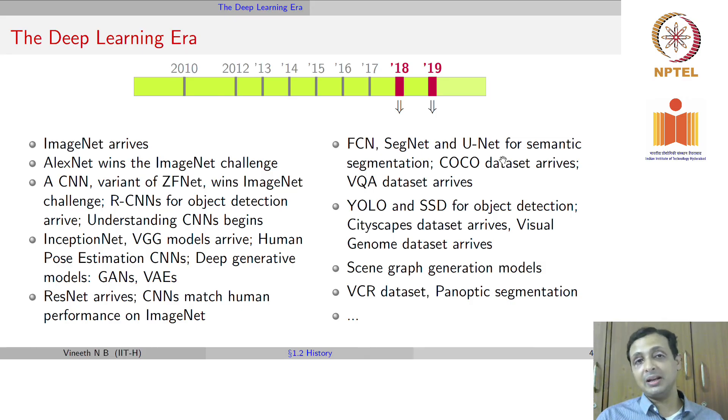In 2018 and 2019, higher levels of abstraction such as the visual commonsense reasoning dataset, where we try to see if we not only give an answer to a question on an image but can also give a rationale to that answer, and tasks such as panoptic segmentation have been developed. As you can see, this journey has focused on going from low level image understanding to higher and higher abstractions of the world we see around us from images.